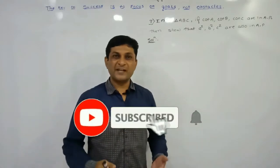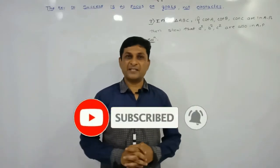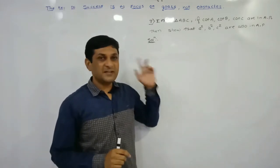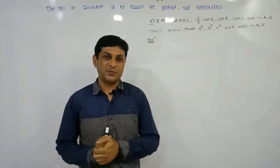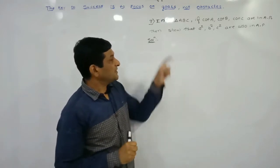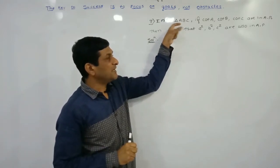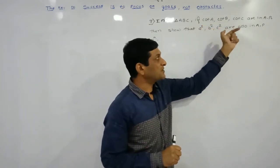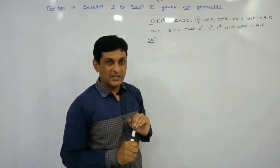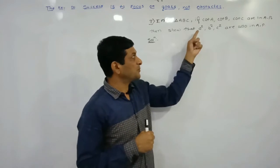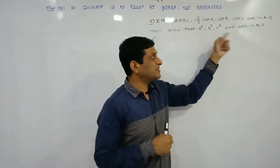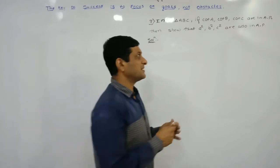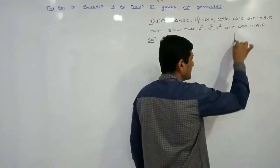Hello friends, most welcome to my YouTube channel Maths by Samit Deshmukh. Today we are discussing Example 7 from Exercise 3.2. In triangle ABC, it is given that cot A, cot B, cot C are in arithmetic progression. Using this condition we have to prove that a², b², c² are also in arithmetic progression.